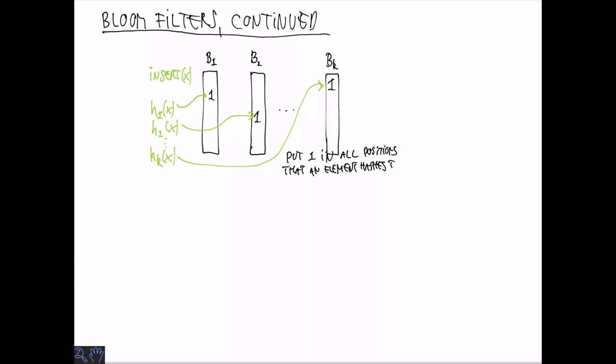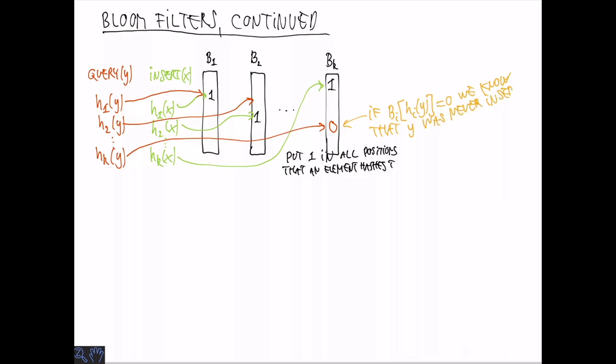What about queries? Suppose we query for some element y. We're going to do almost the same thing. We're going to evaluate all of the hash values and look in these bit vectors. If we see a 0 somewhere then we know that for sure y cannot have been inserted because then we would have placed a 1. In this case it's safe to answer no or 0 because we can only do that if we know for sure that an element is not in the set. If it happens that all of the hash values that we look at, all the bit positions that we look at are 1, then it might be that y was inserted. It could also be that we just had hash collisions with things that were inserted and then we answer 1 or yes.